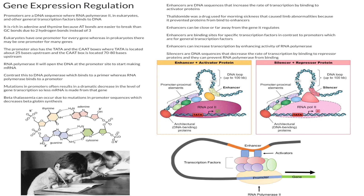The promoter region also has the TATA box and the CAT box, where the TATA box is about 25 bases upstream and the CAT box is about 70 to 80 bases upstream. Essentially what happens at the promoter is that it gathers a bunch of transcription factors in that area, which ultimately helps RNA polymerase 2 to transcribe DNA into RNA. In contrast, DNA polymerase binds to a primer, whereas RNA polymerase binds to a promoter.